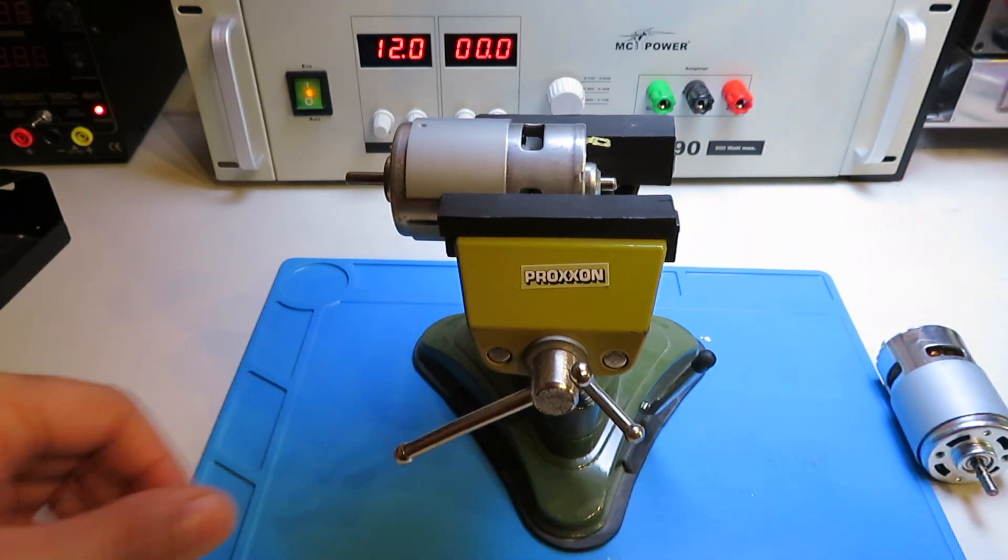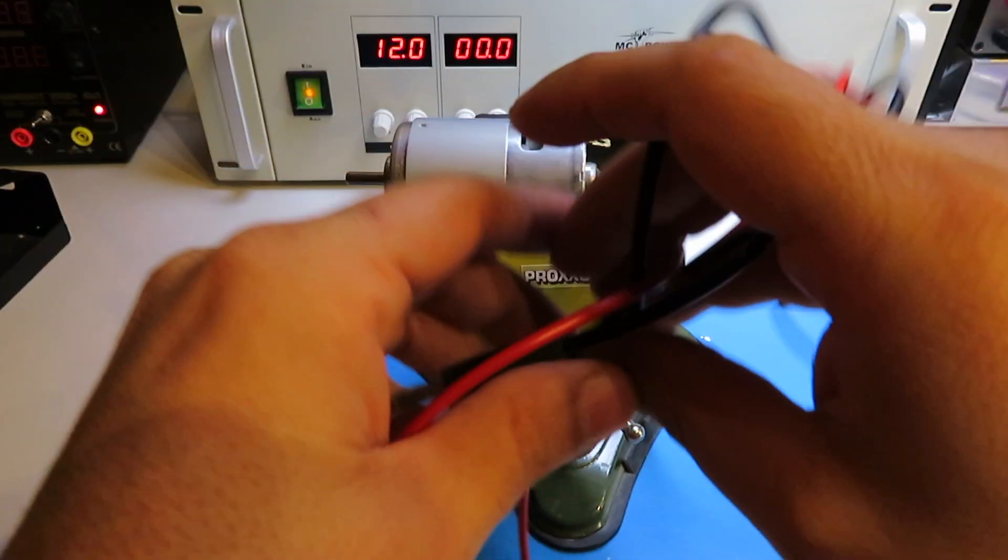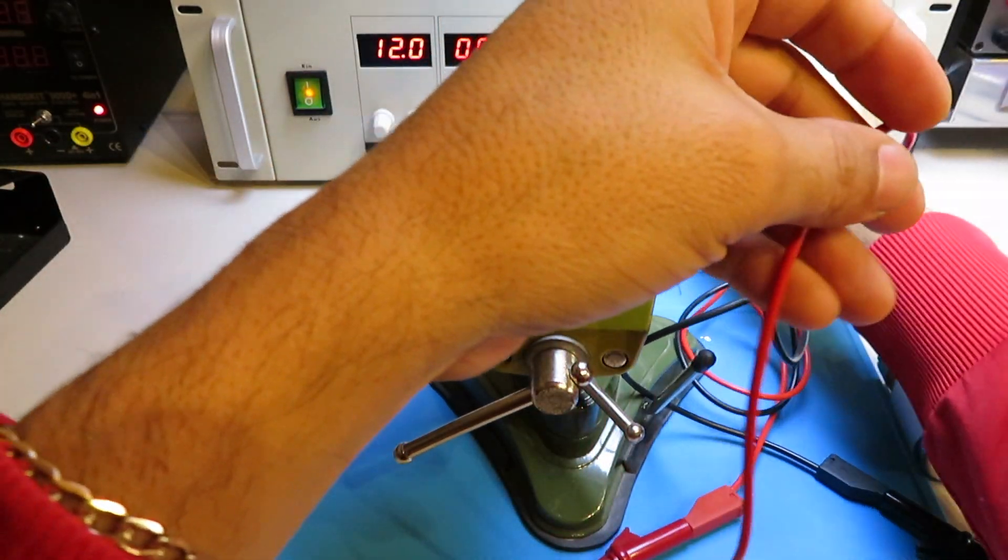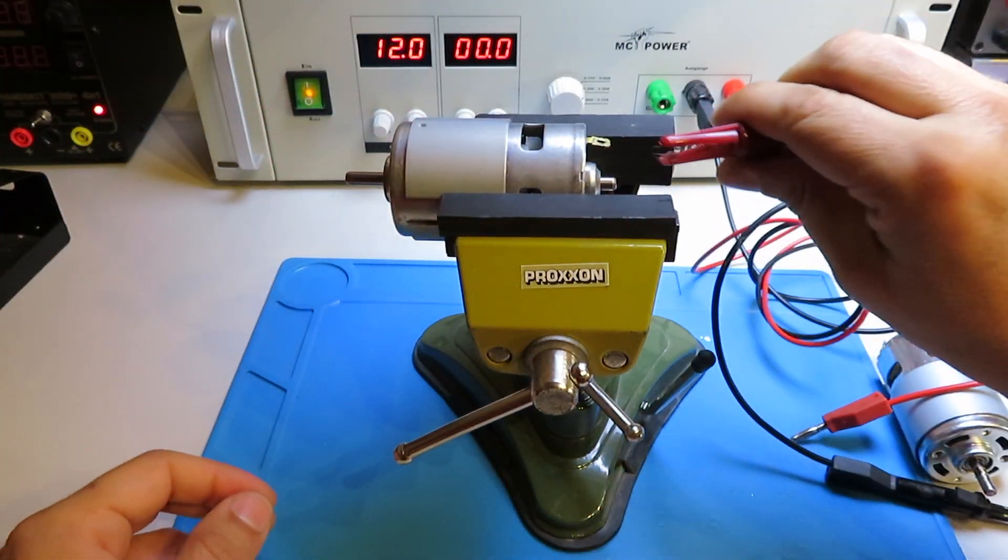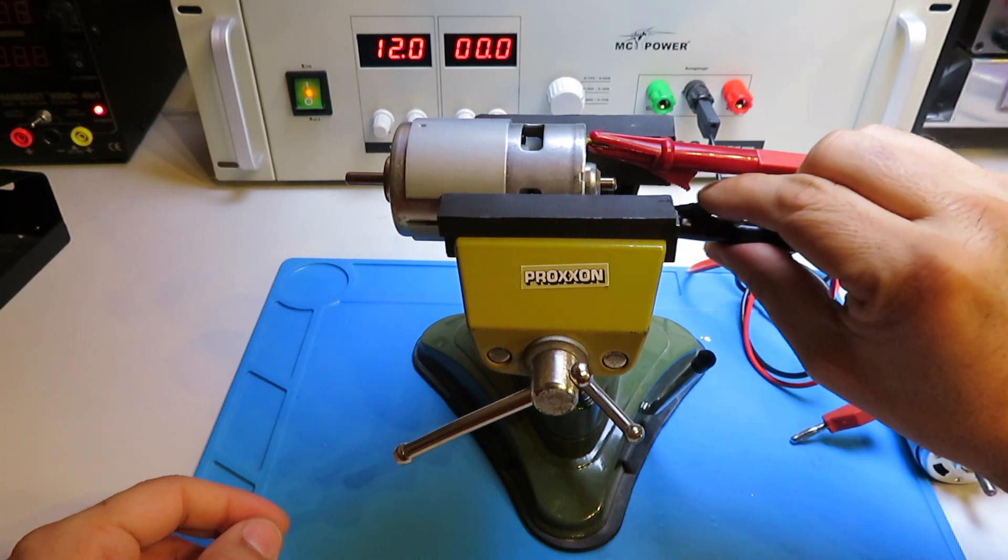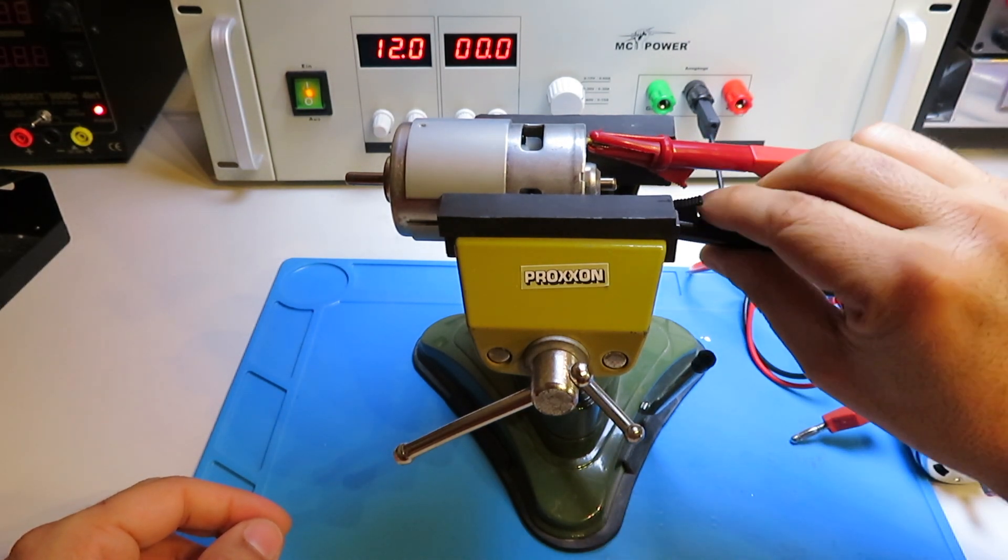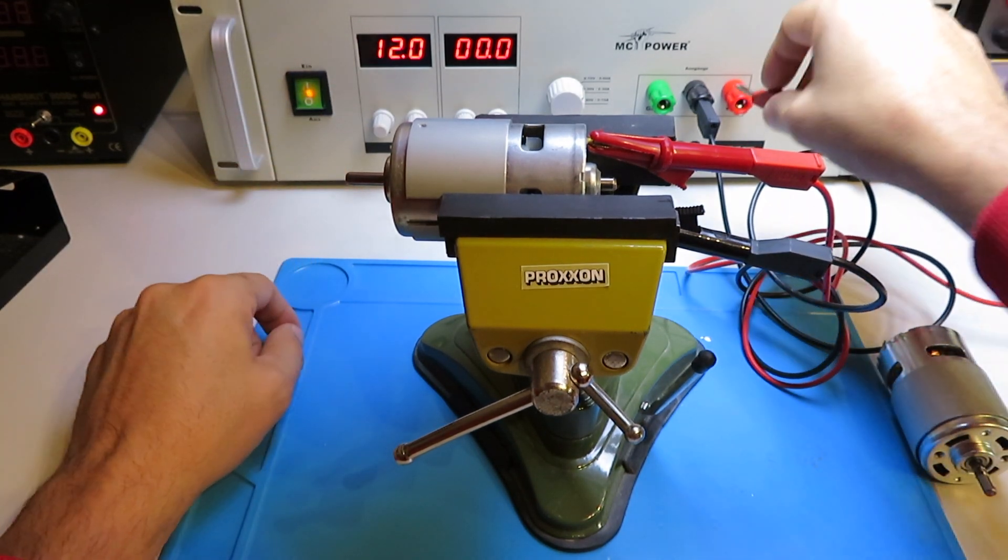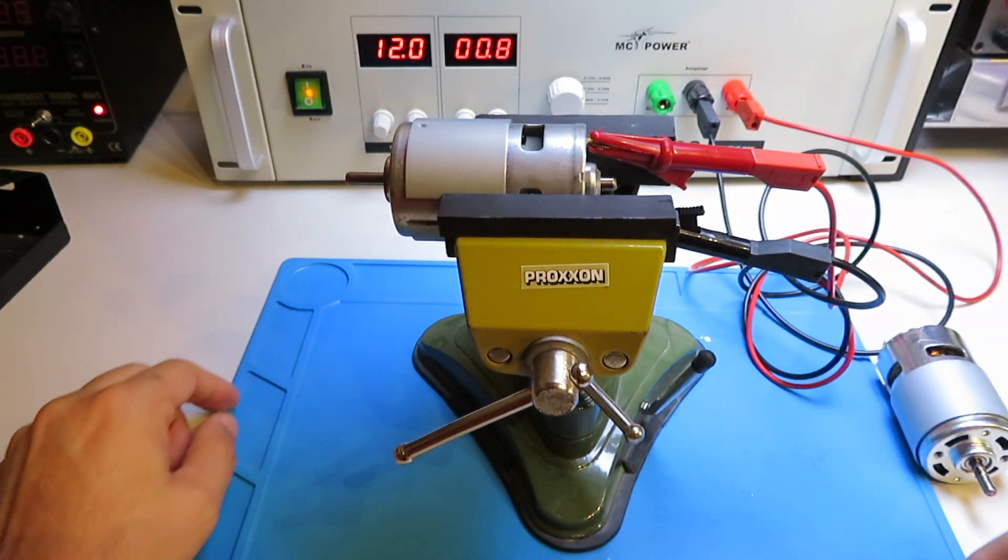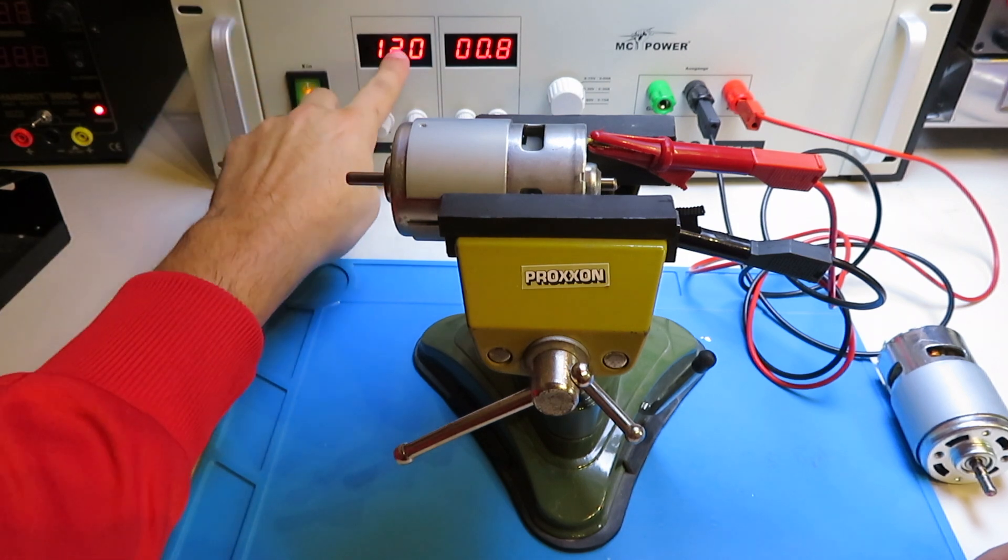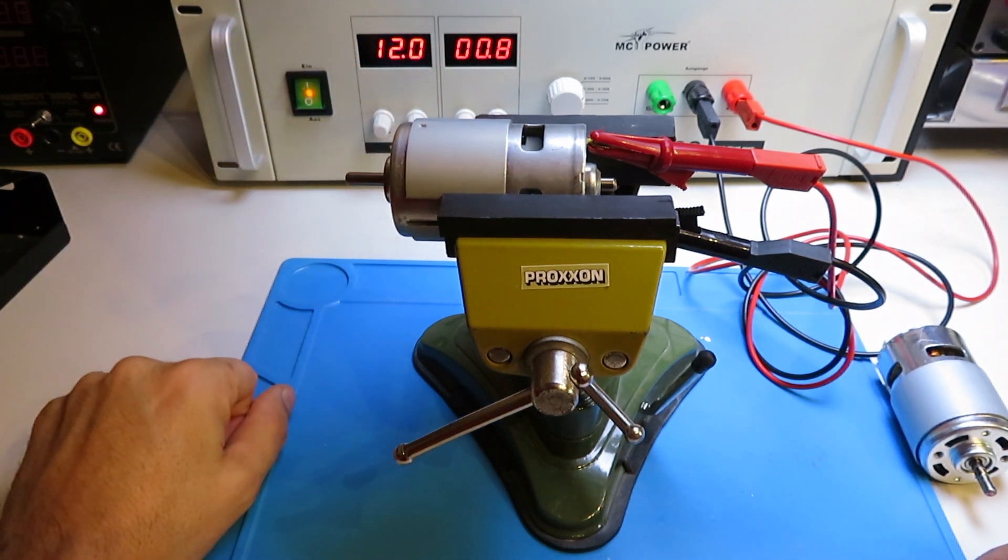Here we go. So let's plug the positive and negative into the motor. And now let's see at 12 volts. So as you guys can see, this motor here at 12 volts draws 800 milliamps.